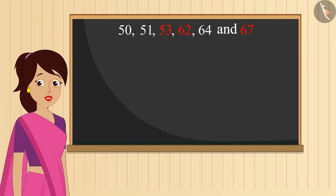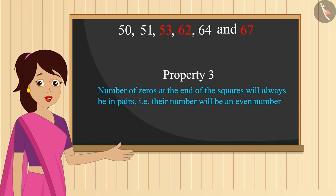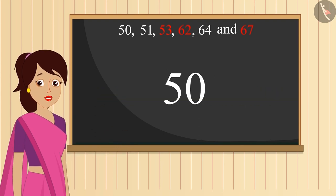Of course! To be a perfect square, a number of zeros at the end of a number must be even. But, there is only one zero in 50. Therefore, this number will also not be a perfect square.